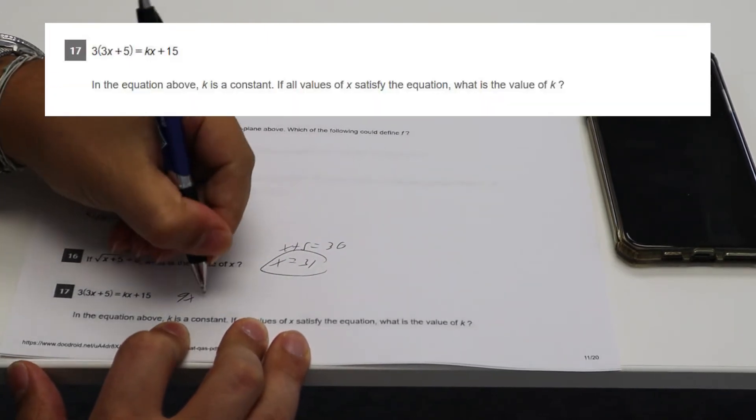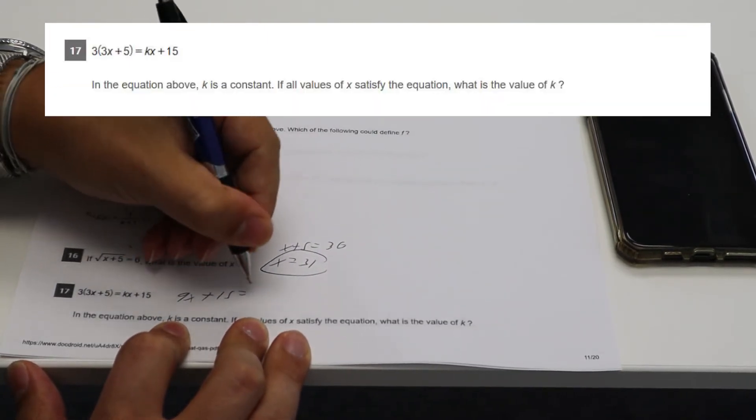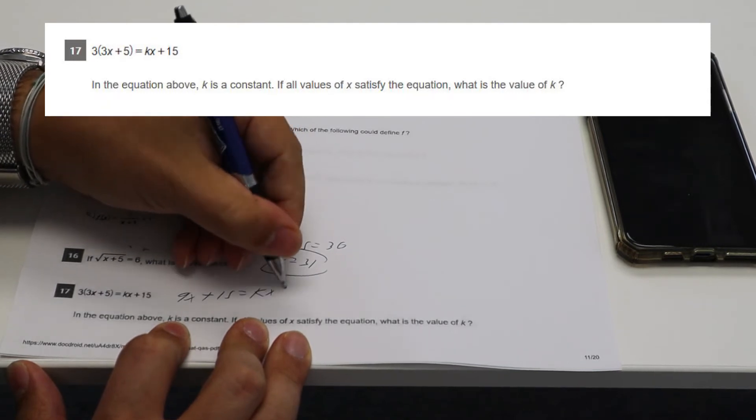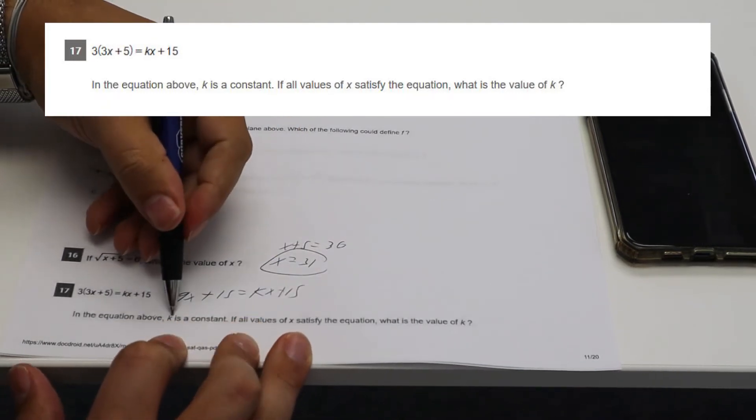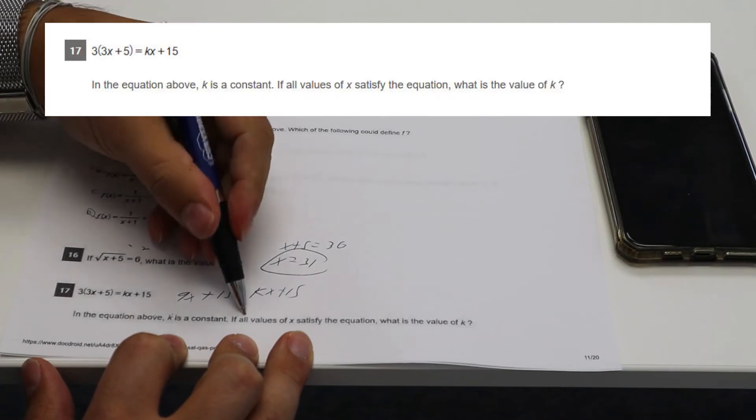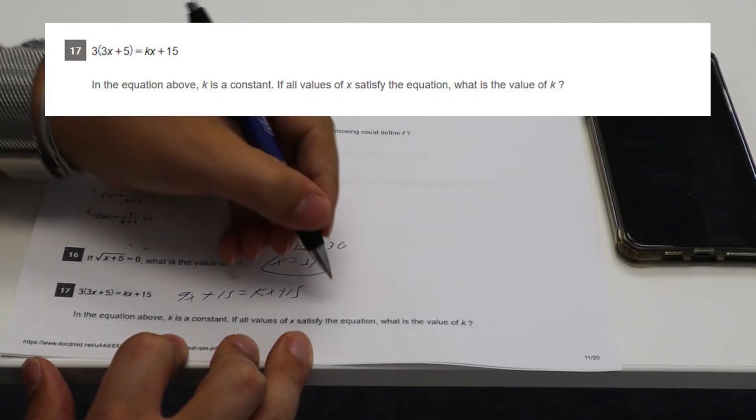All right. 9 X plus 15 equals K X plus 15. Where's the one here? K is a constant. Okay. So that's just going to be nine.